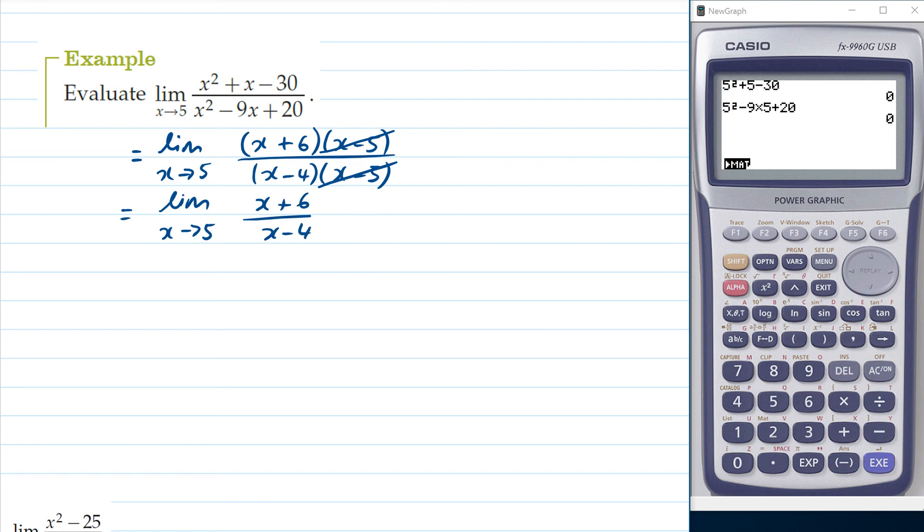Now if we put 5 into this function, let's see what we get. So we would have 5 plus 6 which is 11 and 5 minus 4 which is 1 which is just 11.